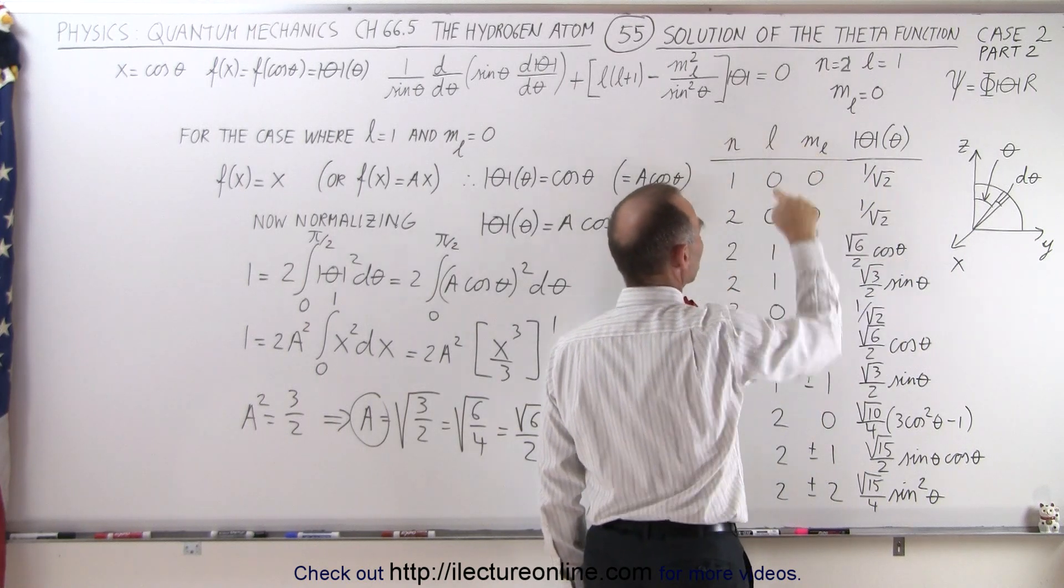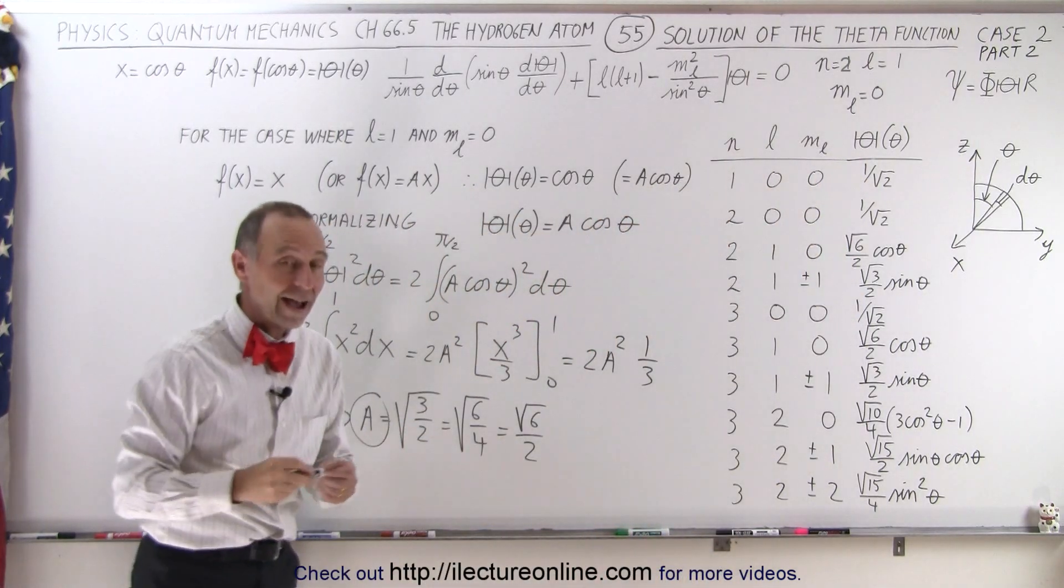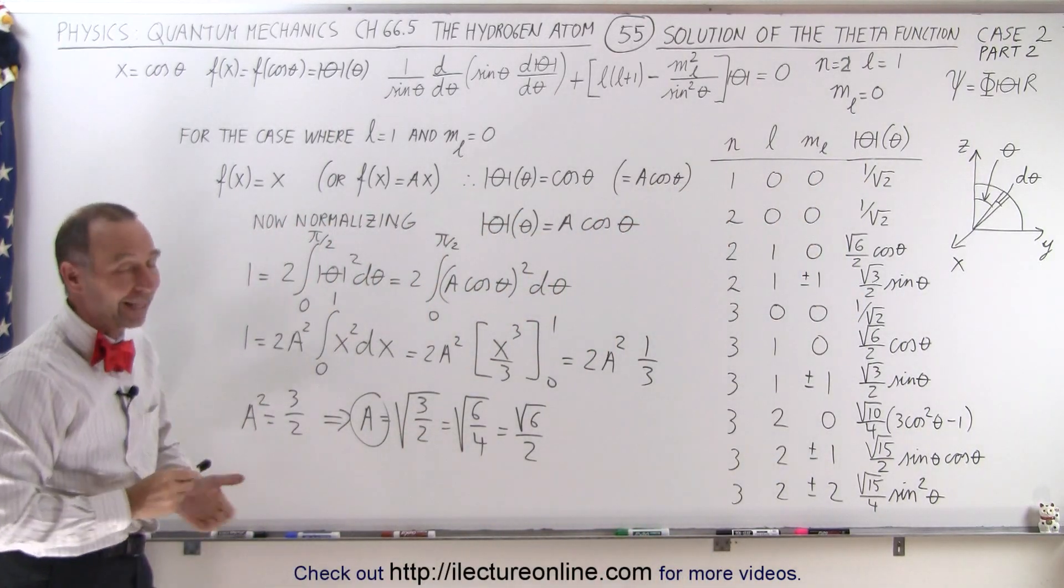This indicates where l equals one and m sub l equals zero. And that's how we got the solution. And that's how it's done.